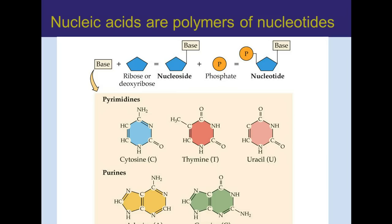Bases — and don't confuse this term base with acid and base. Base is short for nitrogenous base, so it's an unfortunate similarity, but it's not acid and base. Bases are either one-ring or two-ring structures that contain some nitrogen. The general name for a one-ring nitrogenous base is a pyrimidine.